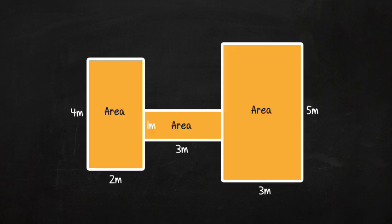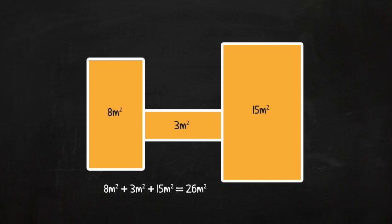The areas of each are figured separately, and then added. 2 times 4 equals 8 meters squared. 3 times 1 equals 3 meters squared. And 3 times 5 equals 15 meters squared. Now, add them all up. 8 plus 3 plus 15 equals 26 meters squared.